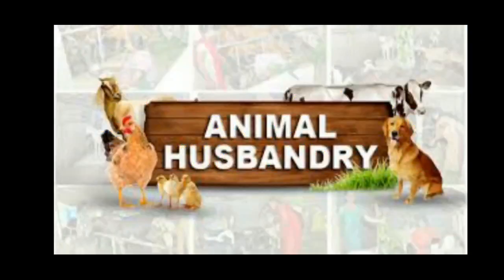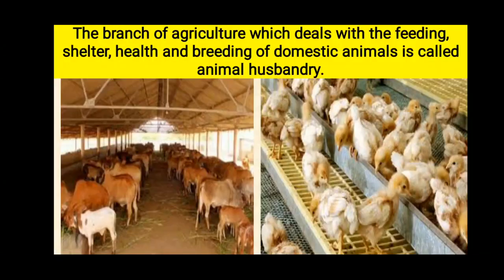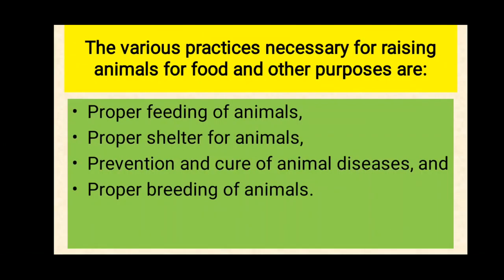Just as each crop has its own requirements of proper soil, irrigation, manures, fertilizers and weedicides, in the same way each domestic animal has its own needs of food, shelter and health care. The branch of agriculture which deals with feeding, shelter, health and breeding of domestic animals is called animal husbandry. The various practices necessary for food and other purposes are: proper feeding of animals, proper shelter for animals, prevention and cure of animal diseases, and proper breeding of animals.